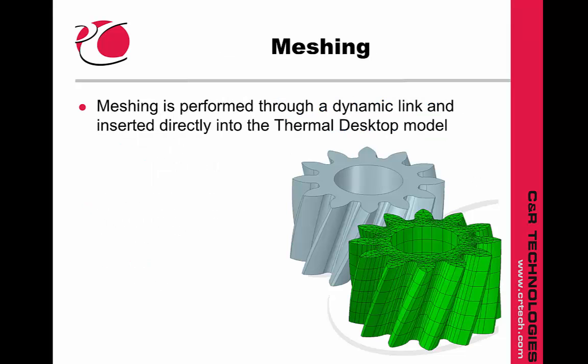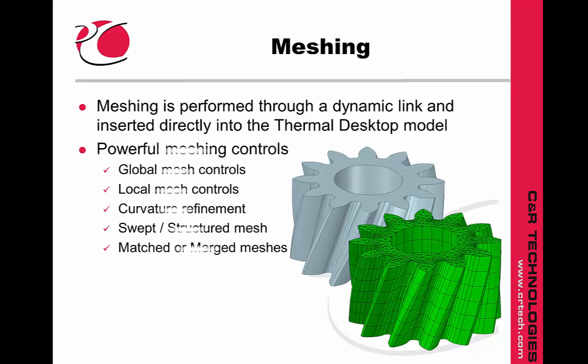The thermal mesh is created in a Thermal Desktop model through a dynamic link. Mesh density, curvature refinement, and element shape can be defined at global or local levels. Swept meshes can be created from edge to edge across a surface or surface to surface across a solid, like this twisted lobe gear. We can also put identical meshes on contacting objects to ensure precise thermal contact.